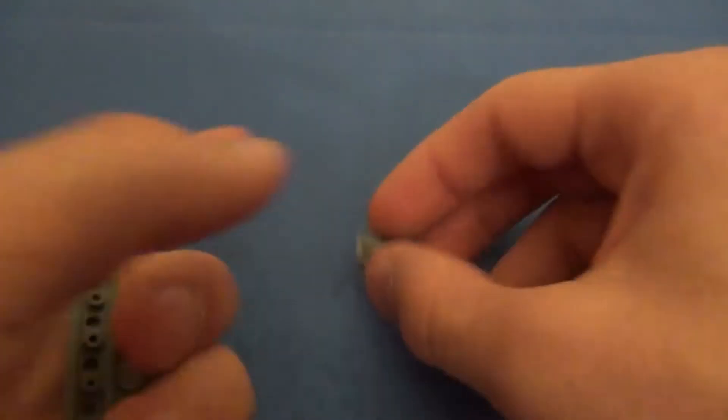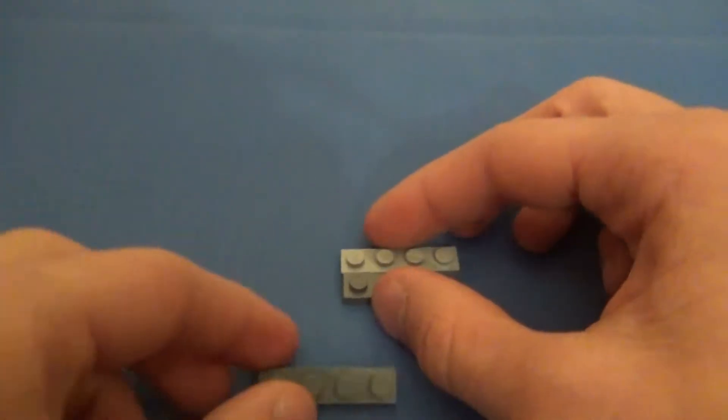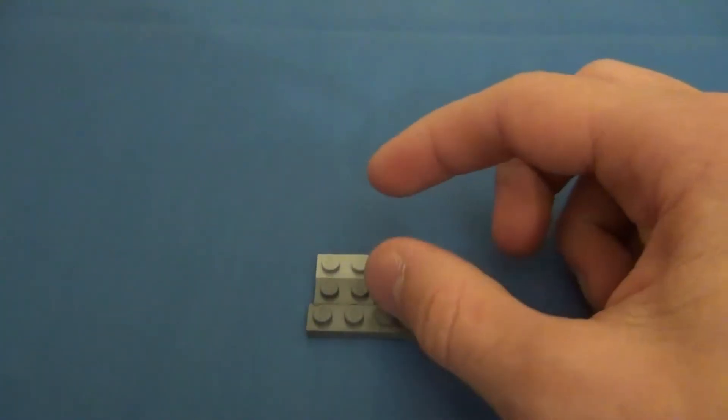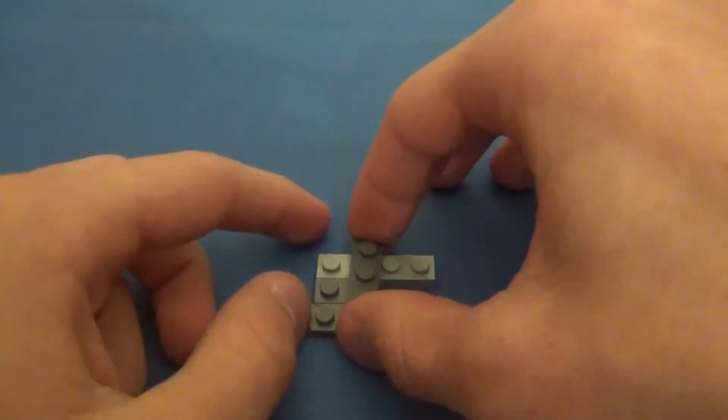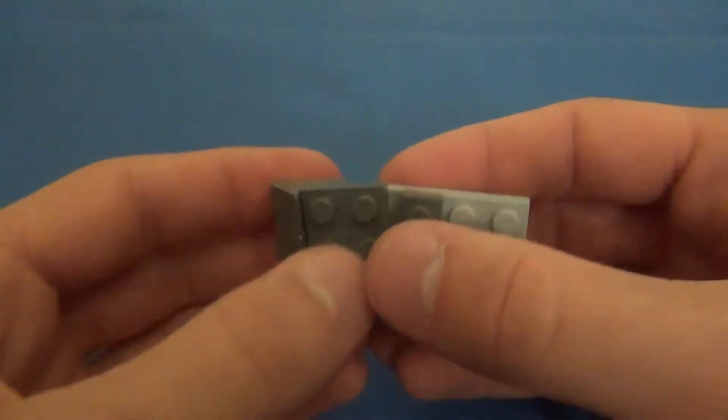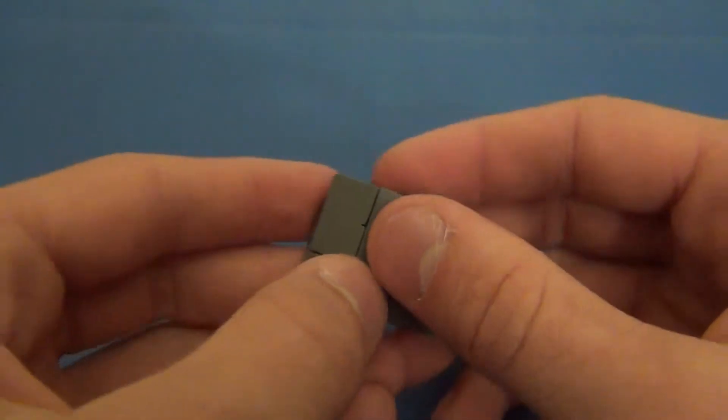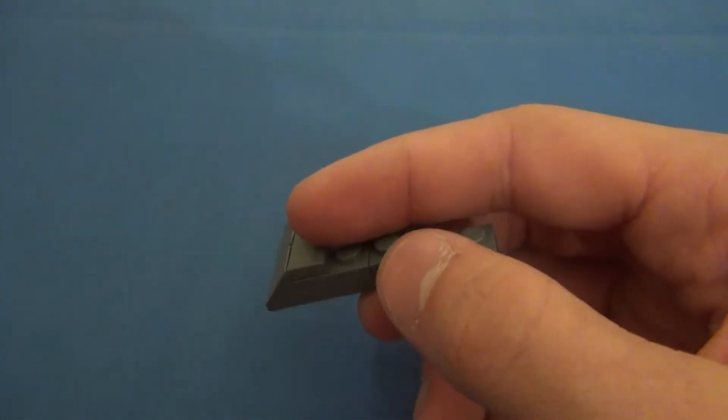So you'll start with the body and you'll have two 1x4 plates. The two 1x4 plates on either side of a 1x2 plate and you'll put the 1x3 plate like that. You'll take this body section and put it on like that, then you'll take the 1x3 tile and put it up front here.